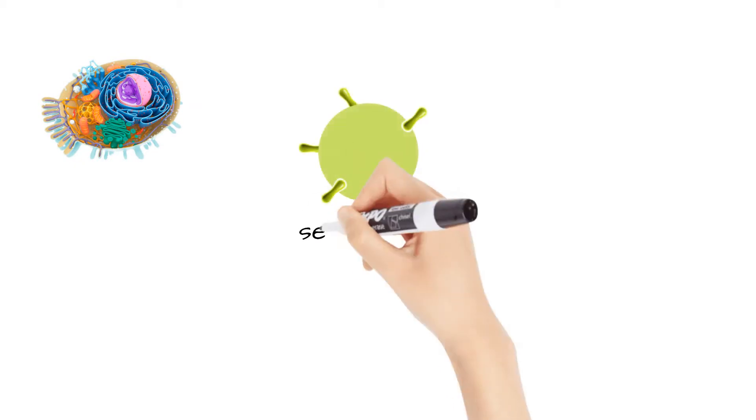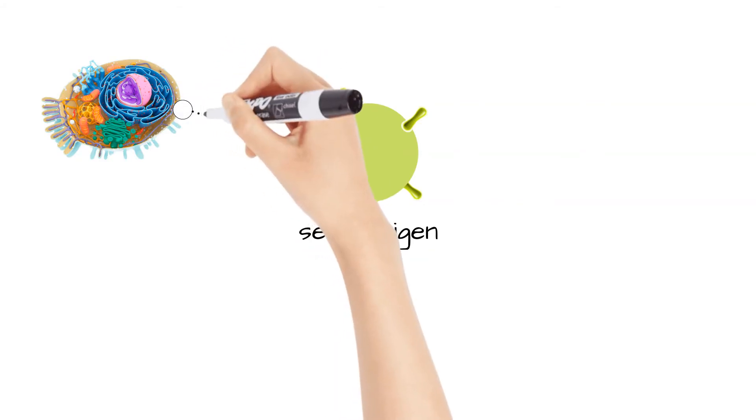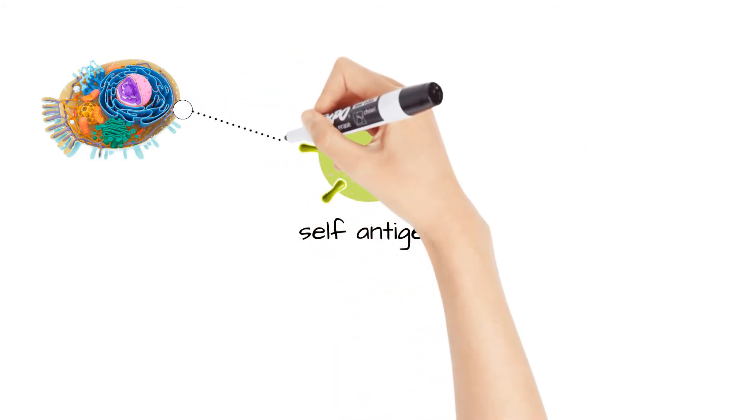All the body cells have them, which are referred to as self-antigens, which the person's own immune system doesn't typically perceive as immunogenic. This is known as immunotolerance.